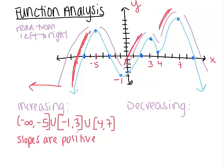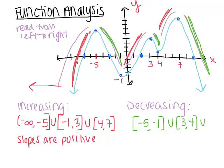Now, where is the function decreasing — where is it going down? It looks like it's going down here, those slopes are negative, this little section here, and then at the end. The decreasing intervals are: negative five to negative one, union three to four, union seven to infinity. Be very careful — you want to make sure you're using those x values, because it's very easy to use y values instead. Get used to using the x values of those points.